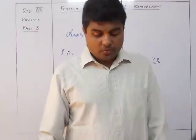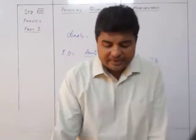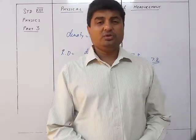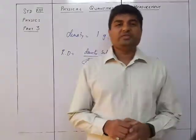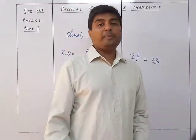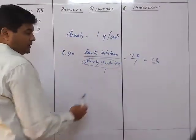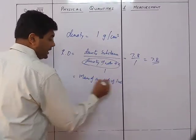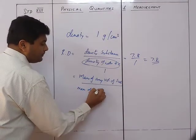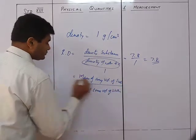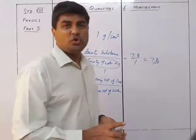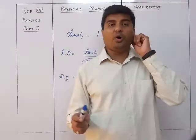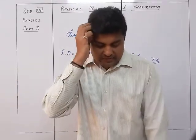For example, a relative density of 7.8 means that a piece of iron of any volume has a mass 7.8 times more than that of an equal volume of water. Units of relative density — it is just a number, a dimensionless quantity, a ratio of same quantities. So relative density has no units. So the two definitions are: density of substance upon density of water, or mass of any volume of substance upon mass of same volume of water.